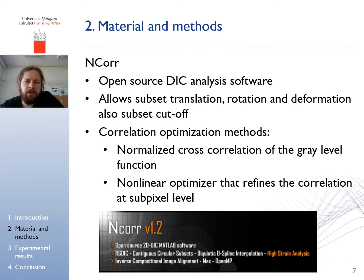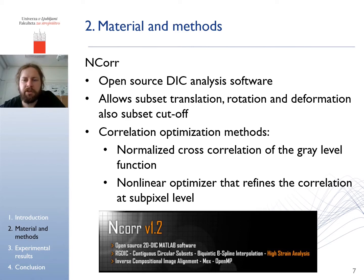N-Core was used as the DIC analysis software. It is an open source software that is well accepted in the research community. It tracks subsets by means of translation, rotation, and deformation, also allowing for subset cut-off if the correlation criteria is not met. It uses two correlation optimization methods: the generalized grayscale cross-correlation and non-linear optimization for sub-pixel correlation.